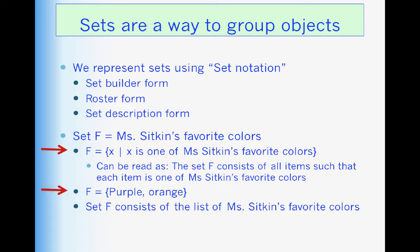The next way we can describe sets is in roster form. And roster form is just like it sounds like. We just list the things that are in the set. So in this case we would put purple and orange in the set because those are my favorite colors. And finally the last way, the easiest way often to describe a set is just to describe it in words. So set F consists of the list of Ms. Sitkin's favorite colors.